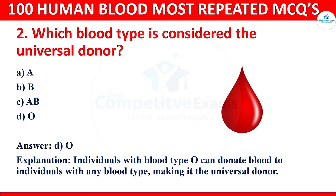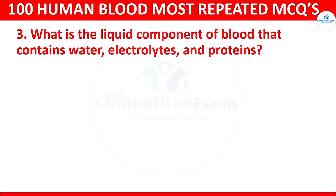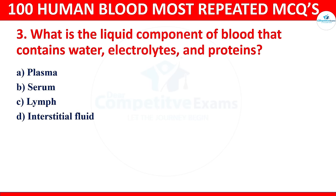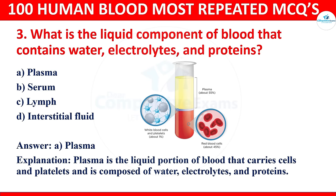Question 3: What is the liquid component of blood that contains water, electrolytes, and proteins? The options are plasma, serum, lymph, or interstitial fluid. The correct answer is plasma. Plasma is the liquid portion of blood that carries cells and platelets and is composed of water, electrolytes, and proteins.